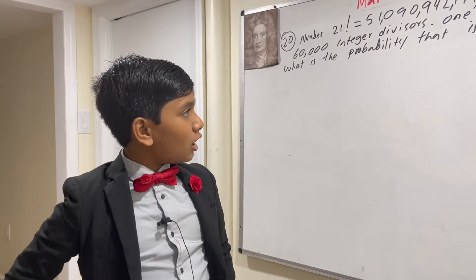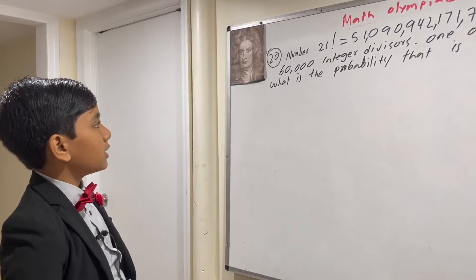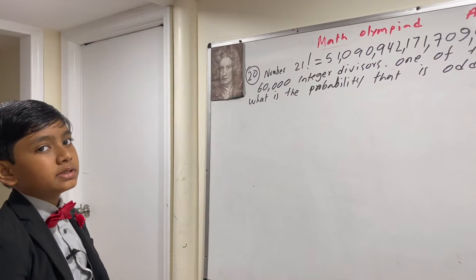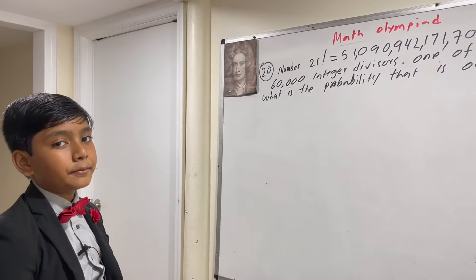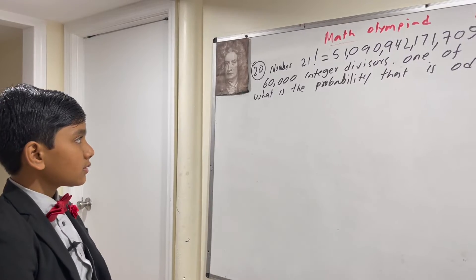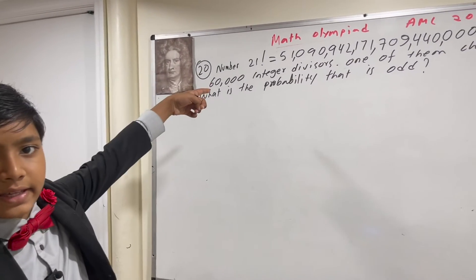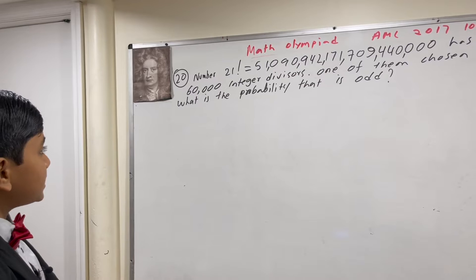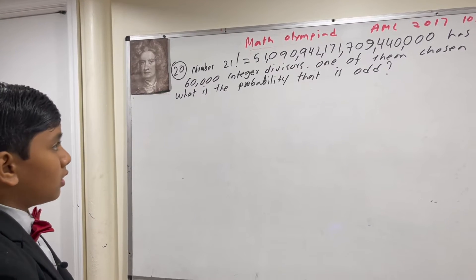Alright, so today we're going to be doing number 20 from the AMC 10B 2017 exam. The problem states: number 21 factorial has over 60,000 integer divisors. One of them is chosen randomly. What is the probability that it's odd?